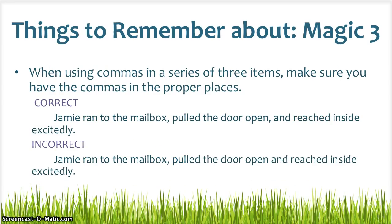Another thing to remember is your comma rules. When you use commas in a series of three items, you need to make sure that you put the commas in their proper places. The two examples below show a correct way and an incorrect way. "Jamie ran to the mailbox, pulled the door open, and reached inside excitedly" — that has the rhythm of magic three because there are two commas. If you look at the second example, there's only one comma, and therefore we don't hear that rhythm because we left out that second comma. Don't forget to use two commas when writing a series of three.